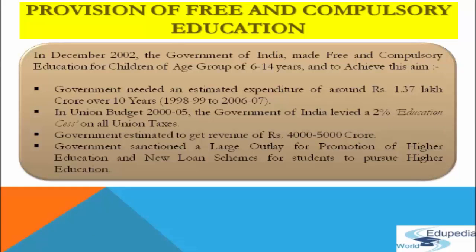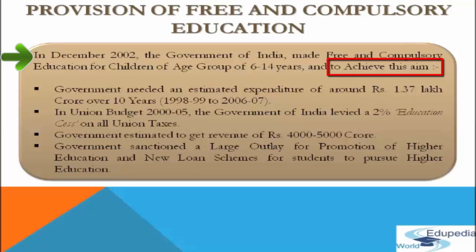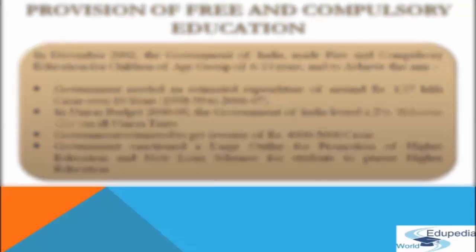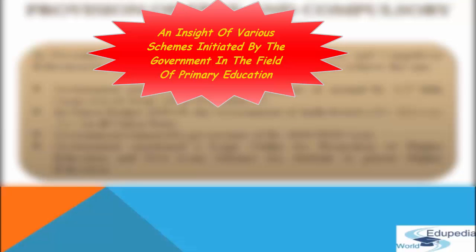Regarding provision of free and compulsory education: in December 2002, the Government of India made free and compulsory education a fundamental right of all children in the age group of 6 to 14 years. To achieve this, an estimated expenditure of around Rs. 1.37 lakh crore over 10 years was needed. In the Union Budget 2004–2005, the government levied a 2% education cess on all union taxes, estimated to generate Rs. 4,000 to 5,000 crores, entirely allocated for elementary education. The government also sanctioned large outlays for higher education and new student loan schemes.